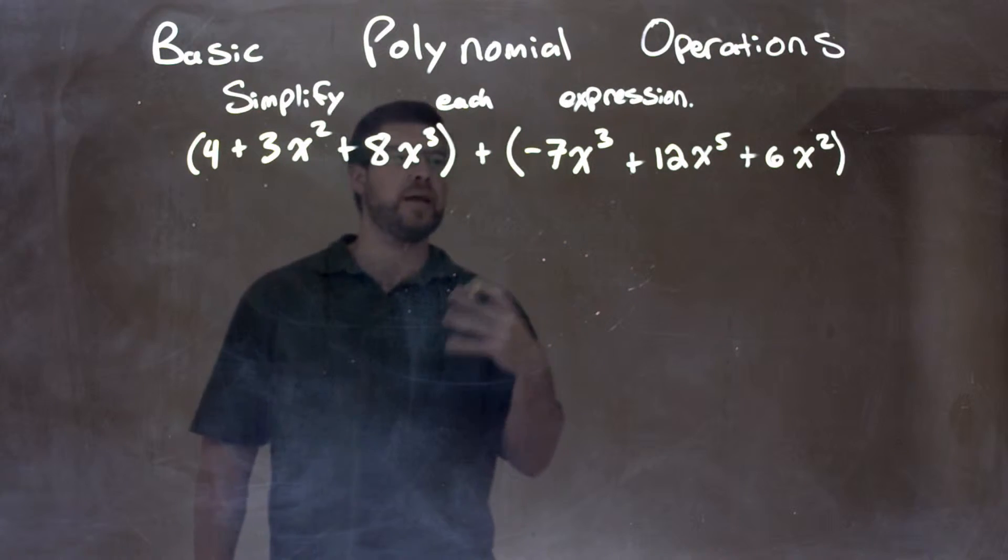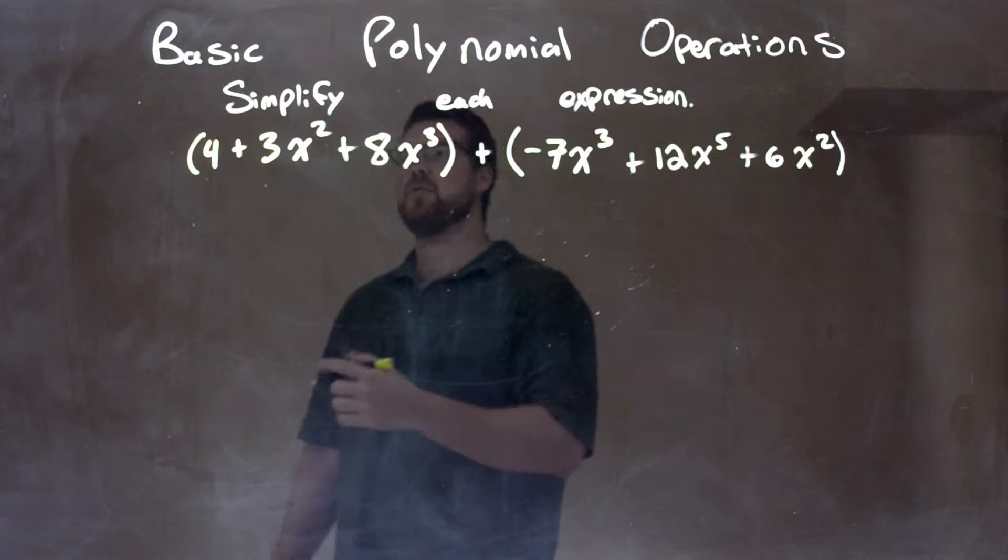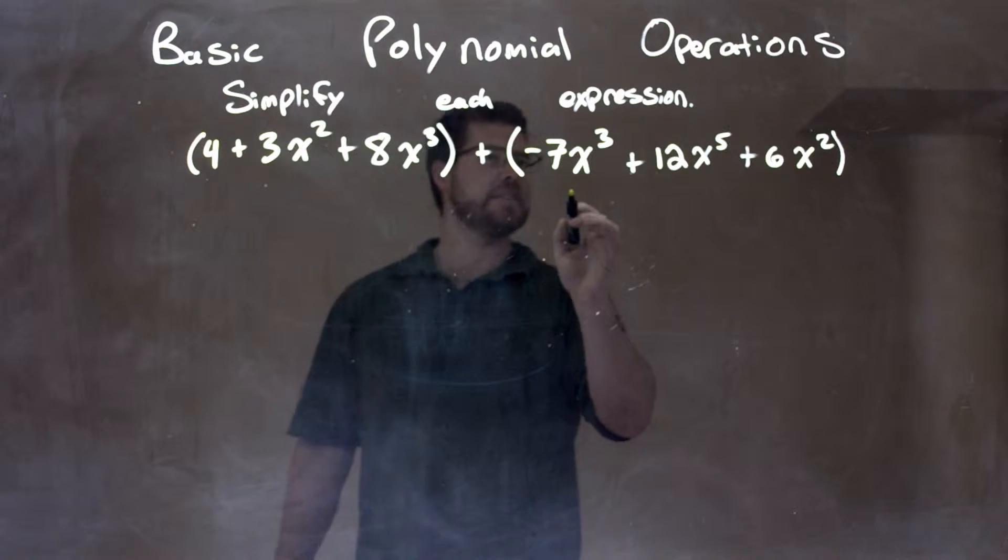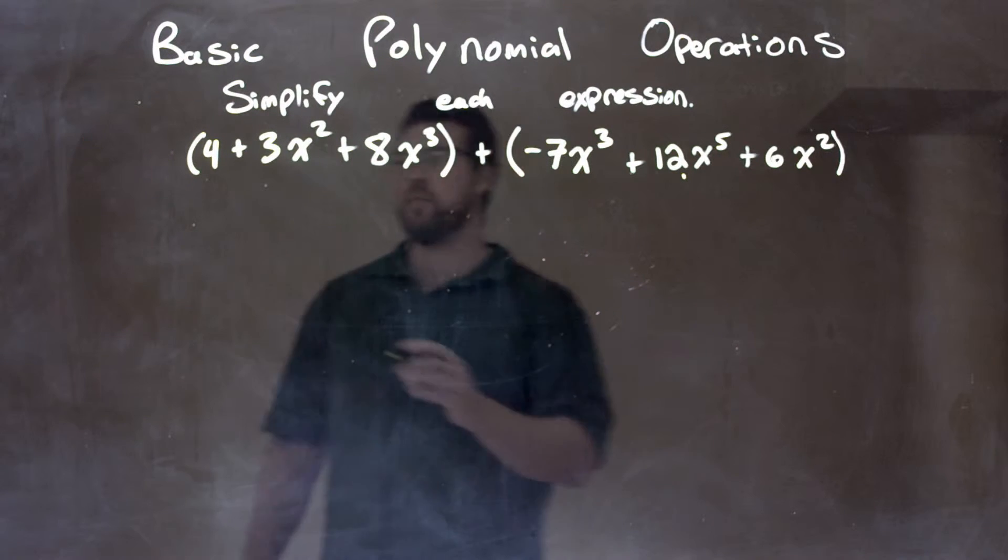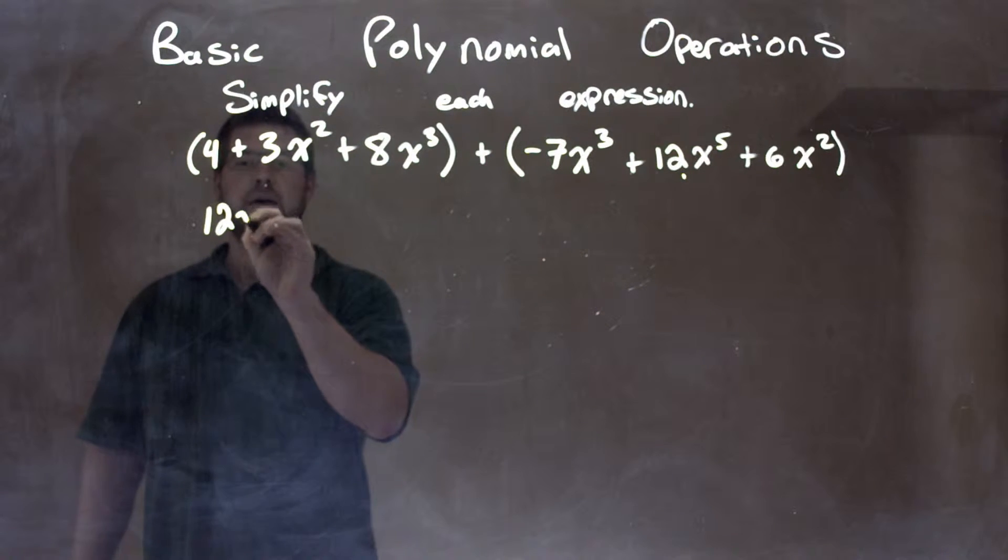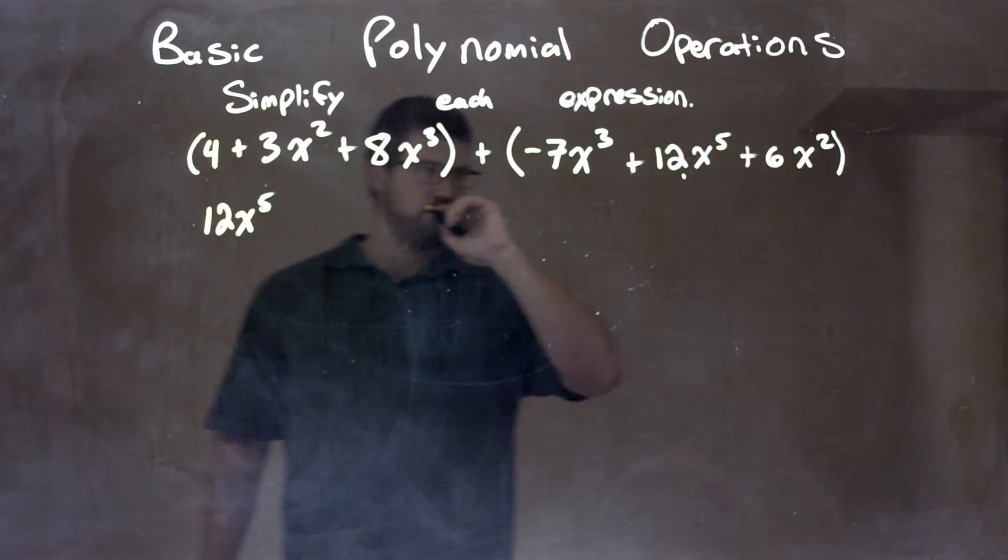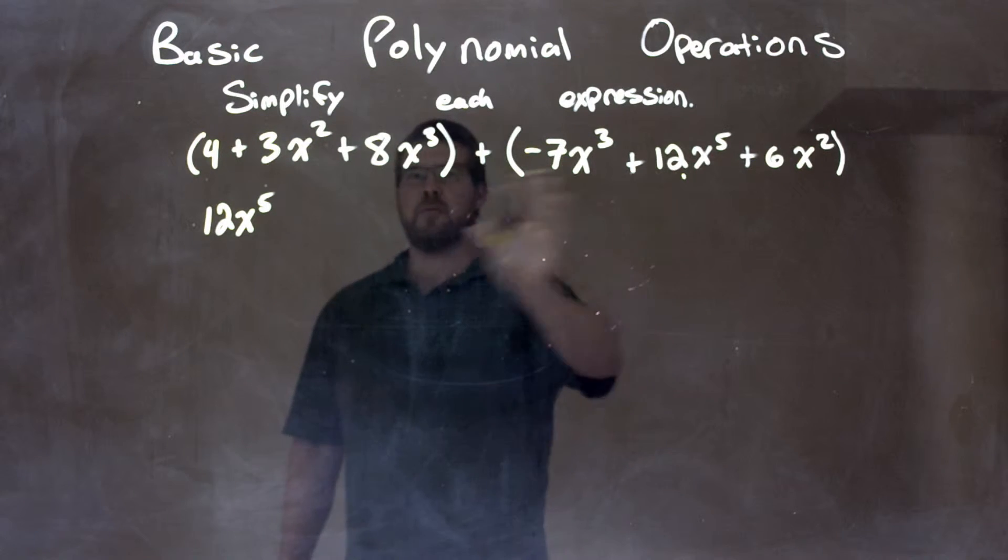So I don't need the parentheses anymore, and now I get my highest term, highest degree. Well, the highest degree I see is to the fifth power right here. I have 12x to the fifth, so I'm going to put that up here for 12x to the fifth power. Then I put a dot underneath showing that I brought that down.